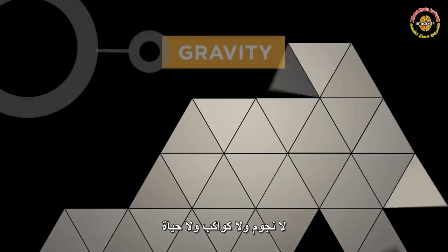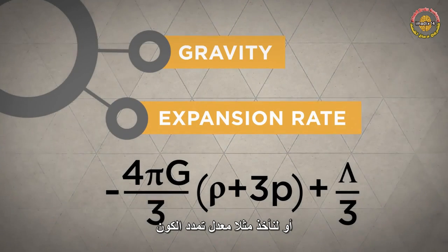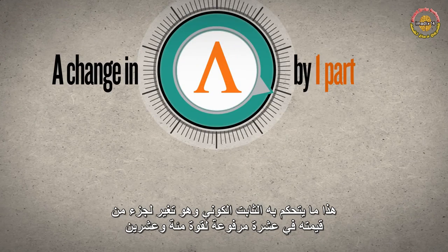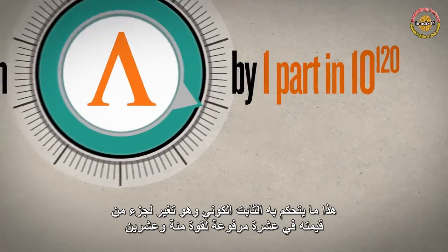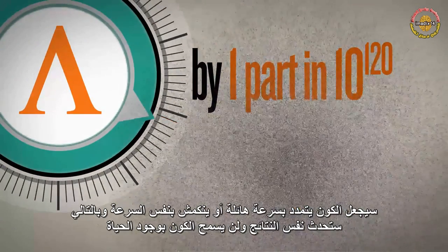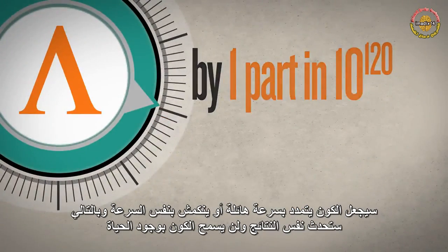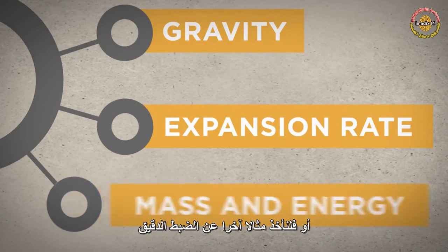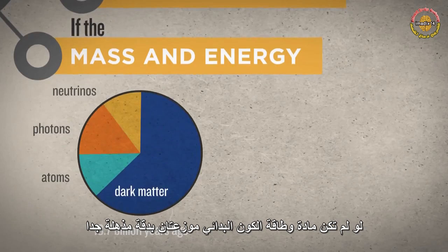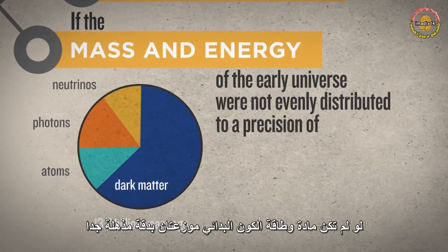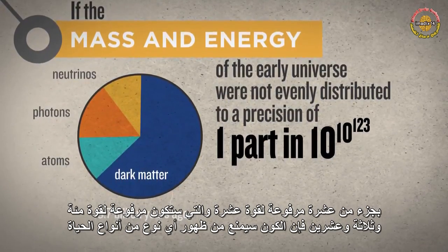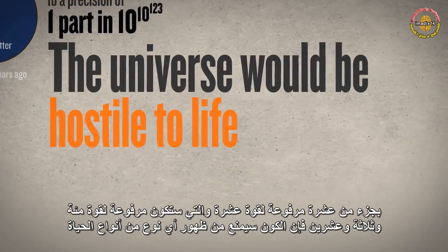No stars, no planets, and no life. Or consider the expansion rate of the universe. This is driven by the cosmological constant. A change in its value by a mere 1 part in 10 to the 120th parts would cause the universe to expand too rapidly or too slowly — in either case, the universe would again be life-prohibiting. Or another example of fine-tuning: if the mass and energy of the early universe were not evenly distributed to an incomprehensible precision of 1 part in 10 to the 10 to the 123rd, the universe would be hostile to life of any kind.